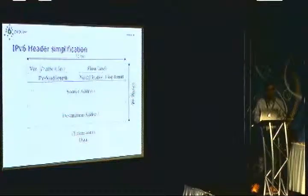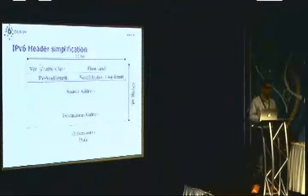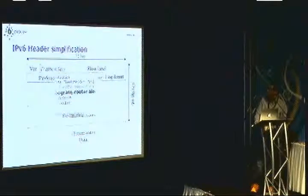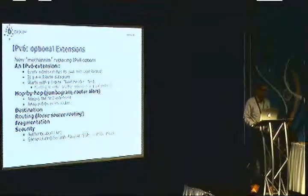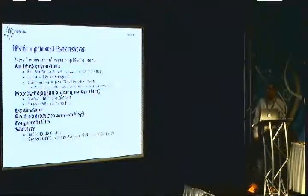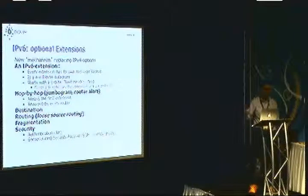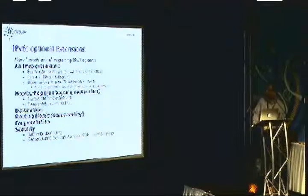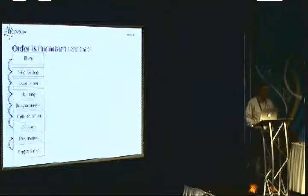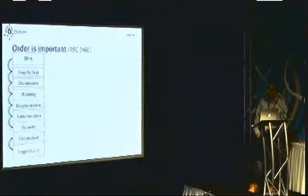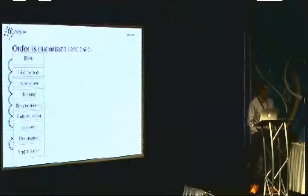We will see some examples of what extensions are used for. One of the extensions is the header of the upper protocol — it could be TCP, UDP, or any other upper-layer protocol. So we have these optional extensions that are a mechanism to replace IPv4 options. They are not processed by routers, and they help to fragment a packet, add security, or add other information. The extension headers we can have in IPv6 are: hop-by-hop, destination, routing, fragmentation, authentication, security, and the last one is the upper-layer protocol.